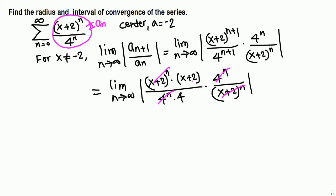We can cancel (x+2)^n from top and bottom, and also 4^n cancels. We are left with (x+2) over 4. Both (x+2) and 4 are independent of n, so we pull them outside the limit. There is nothing left in the limit, so the limit equals 1, giving us |x+2|/4.